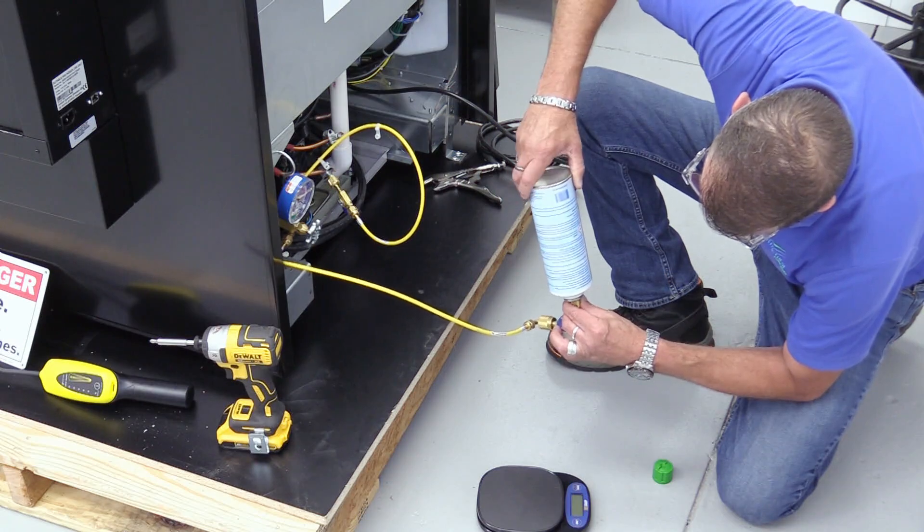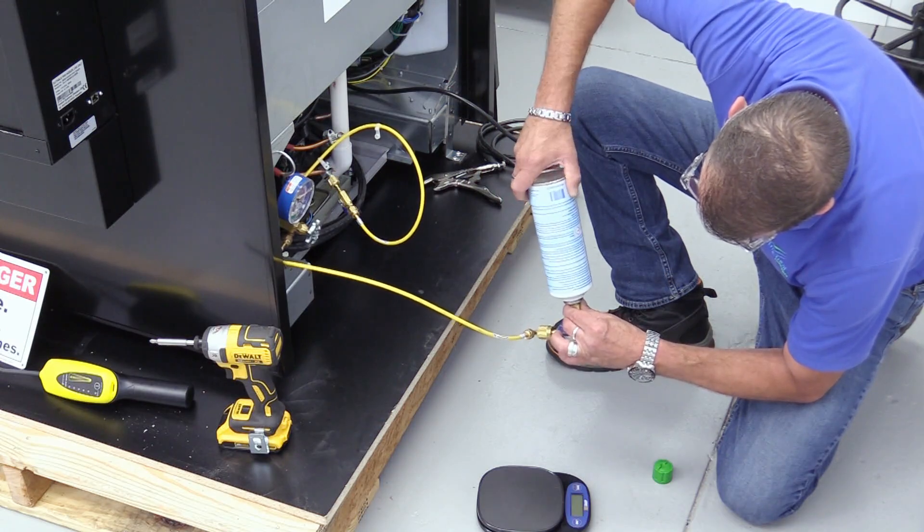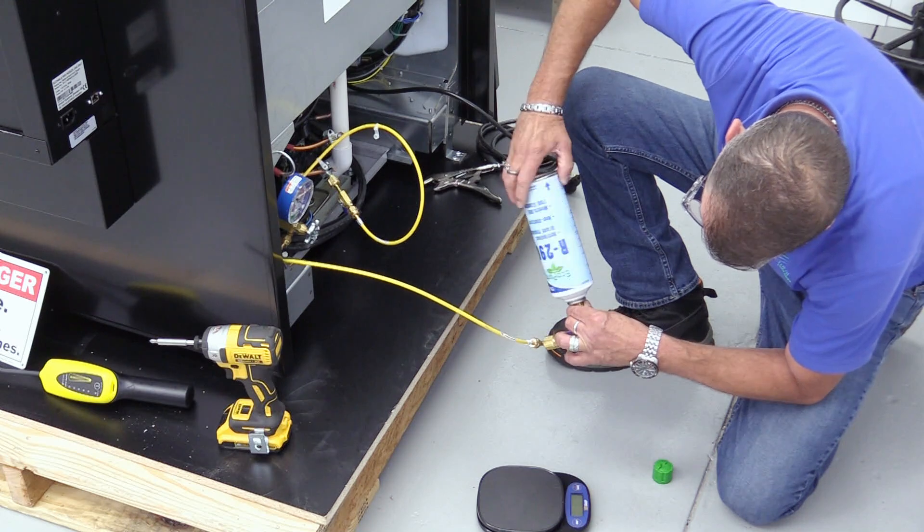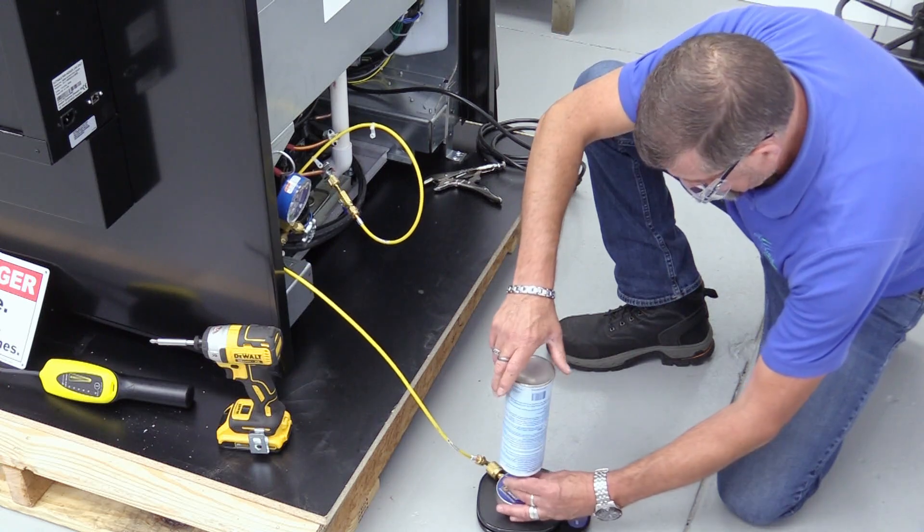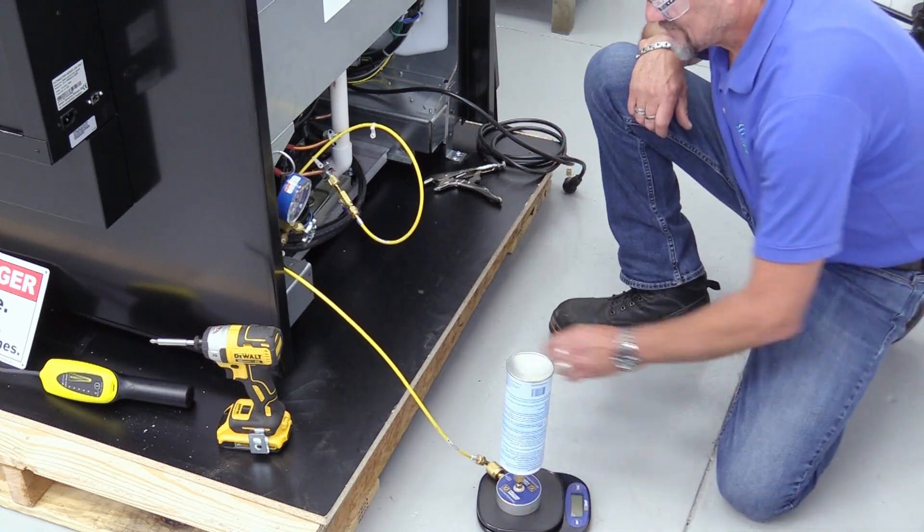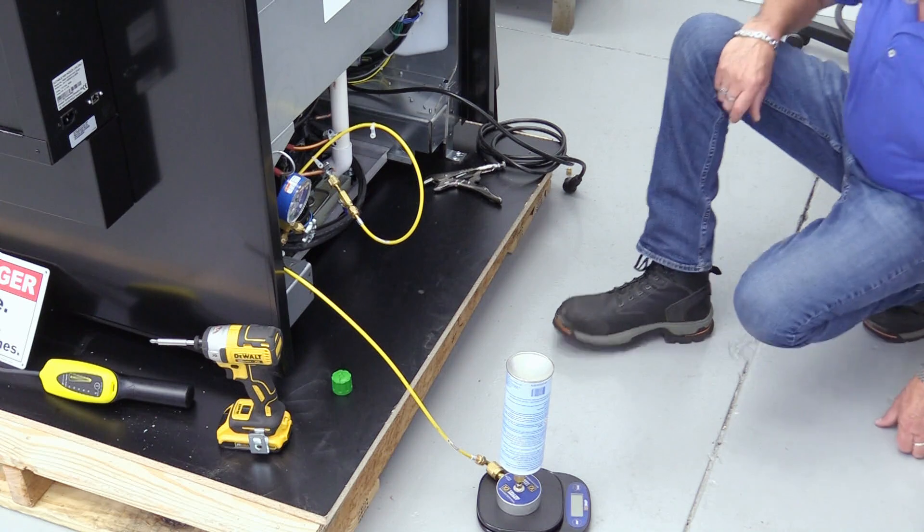Purge the hose before filling equipment to remove the possibility of contamination. Charge unit to the specified R290 amount specified on the serial label using a scale with a minimum of 2 gram resolution and the smallest hose links possible.